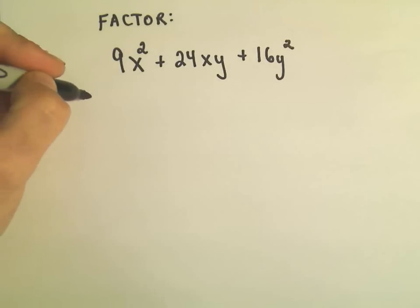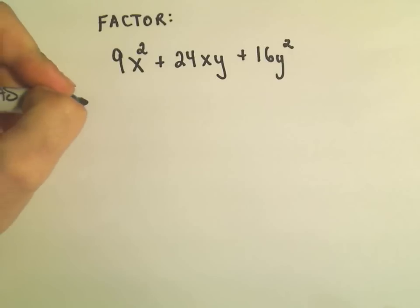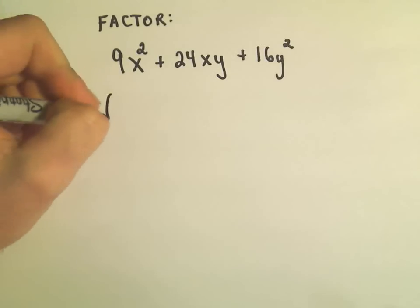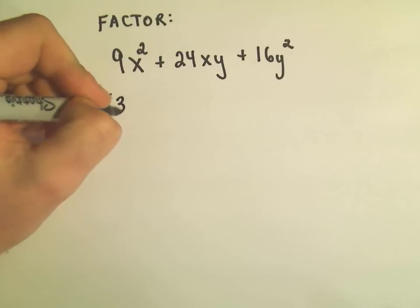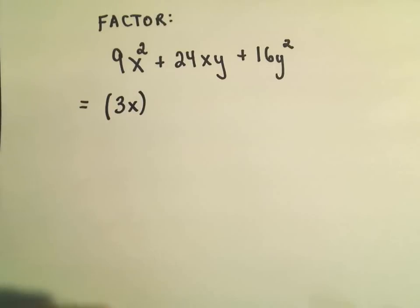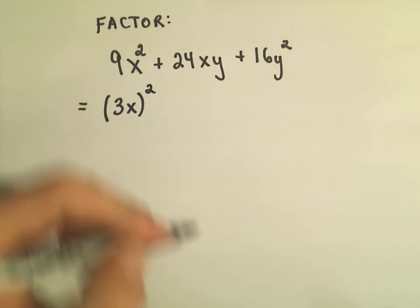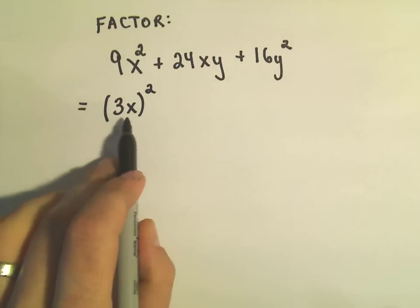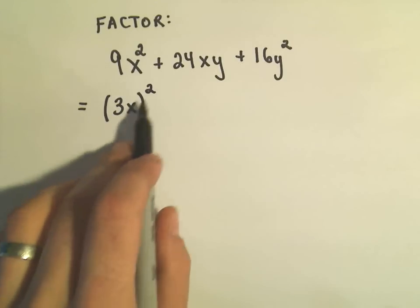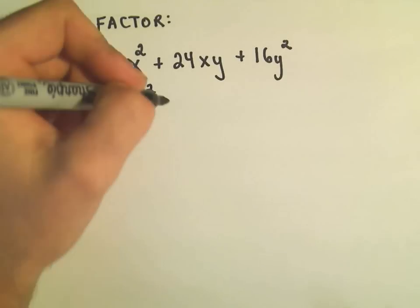Just to emphasize that formula, it says you need to write the first thing as something squared. Well, I could rewrite 9x squared as 3x in parentheses and then square it. So if I multiply this out, if I square it, 3 squared will be 9 and x squared is x squared.